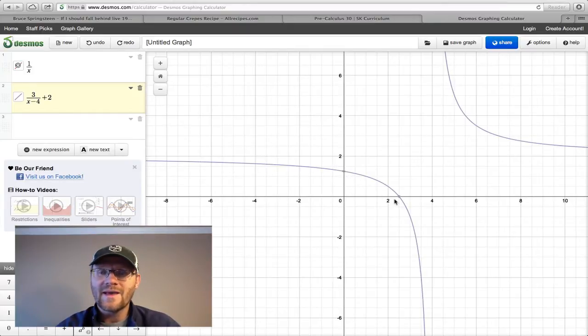In terms of the domain, our domain in this case would be everything but 4. So you could say that x is greater than 4 and x is less than 4. Our range will be everything but 2. So you could say y is greater than 2 and y is less than 2.